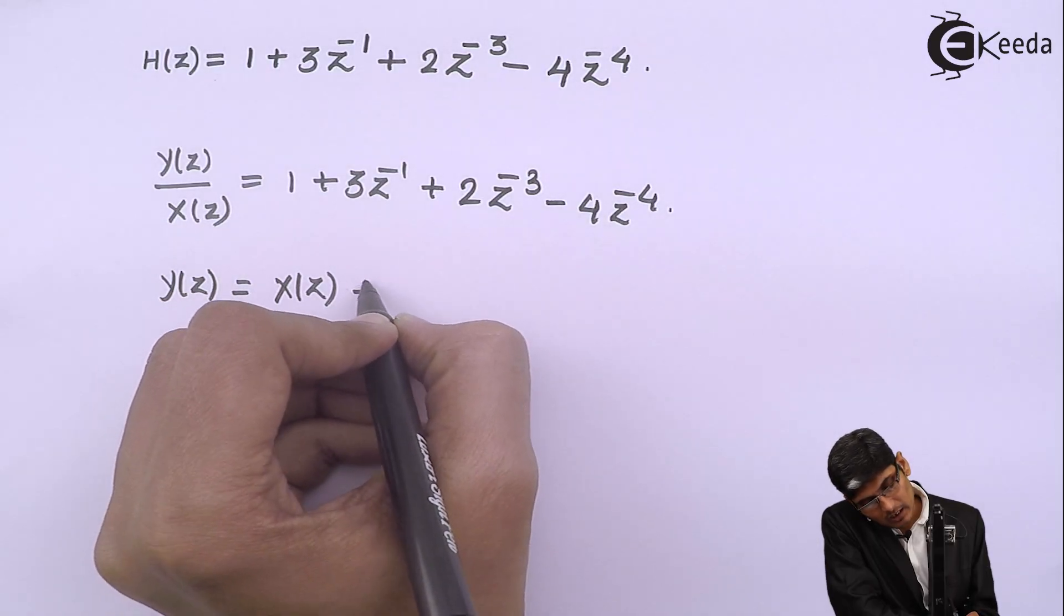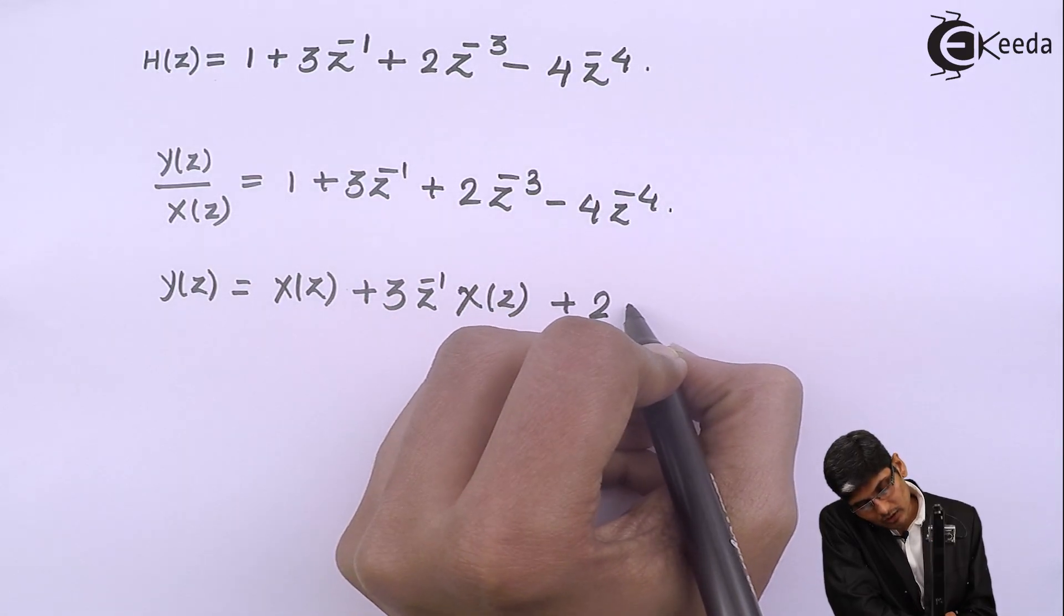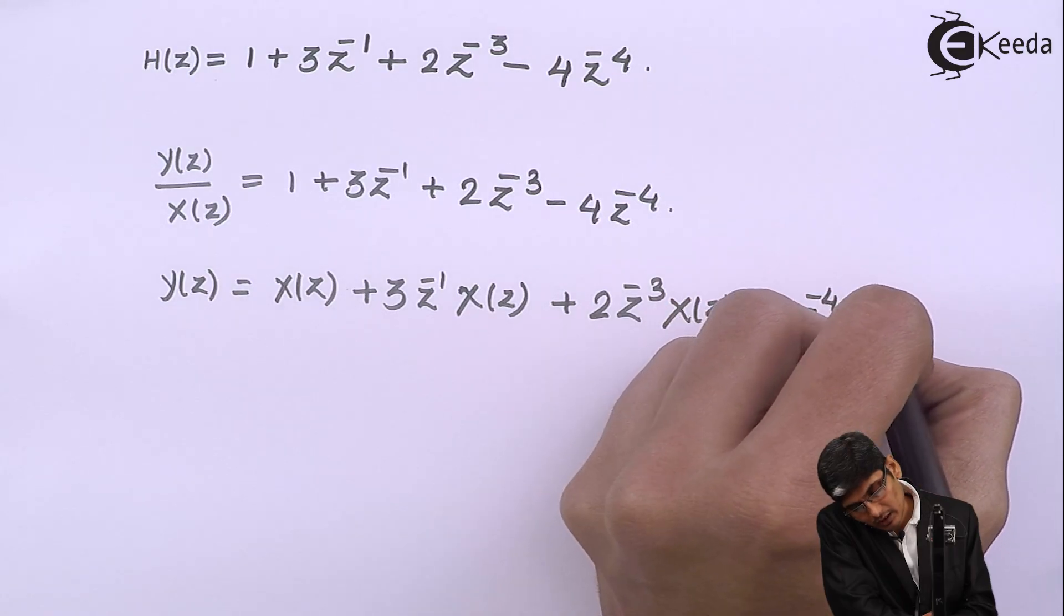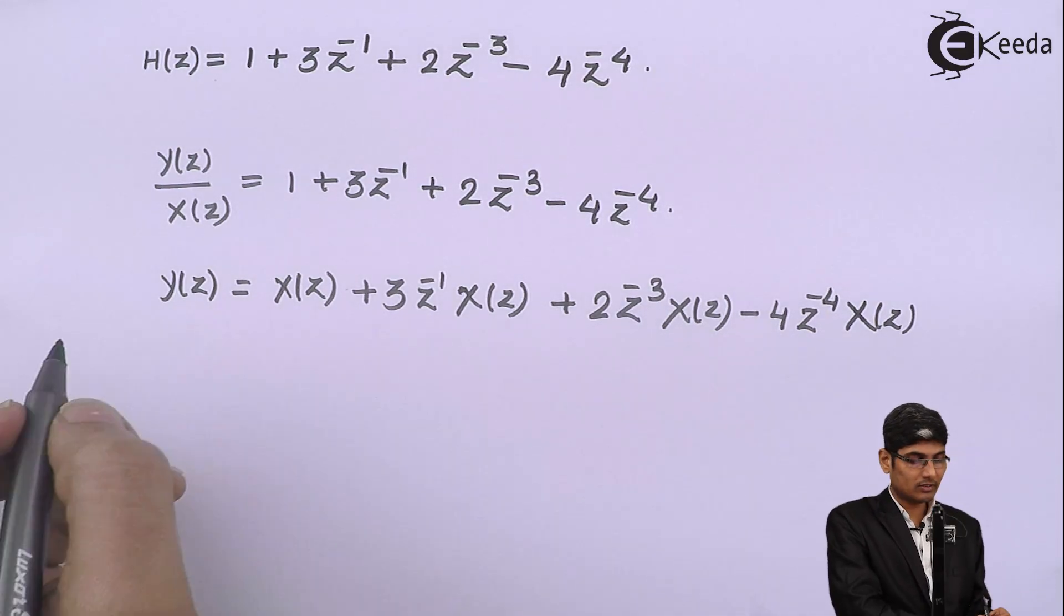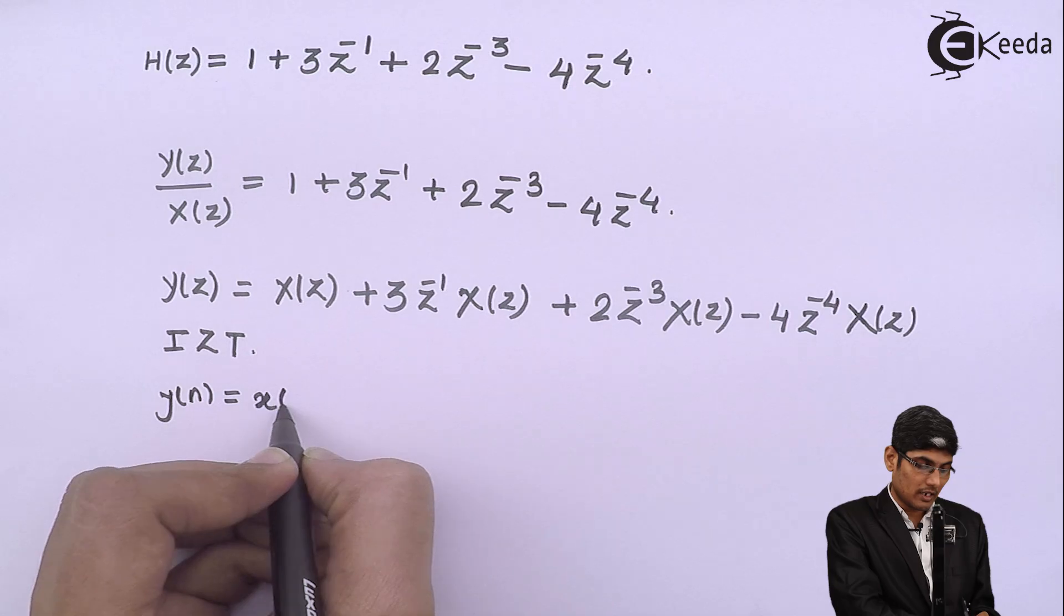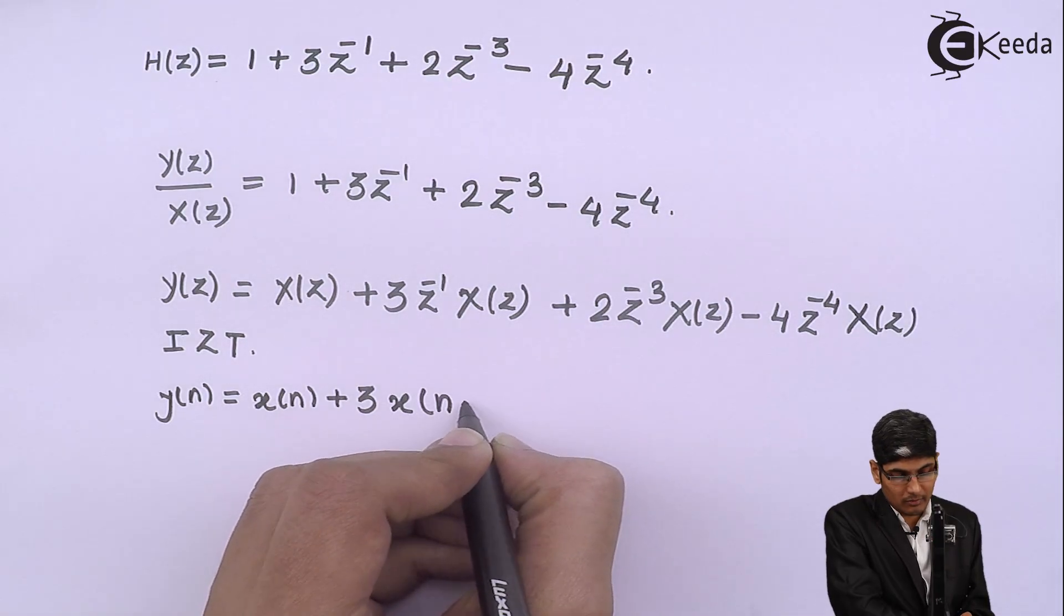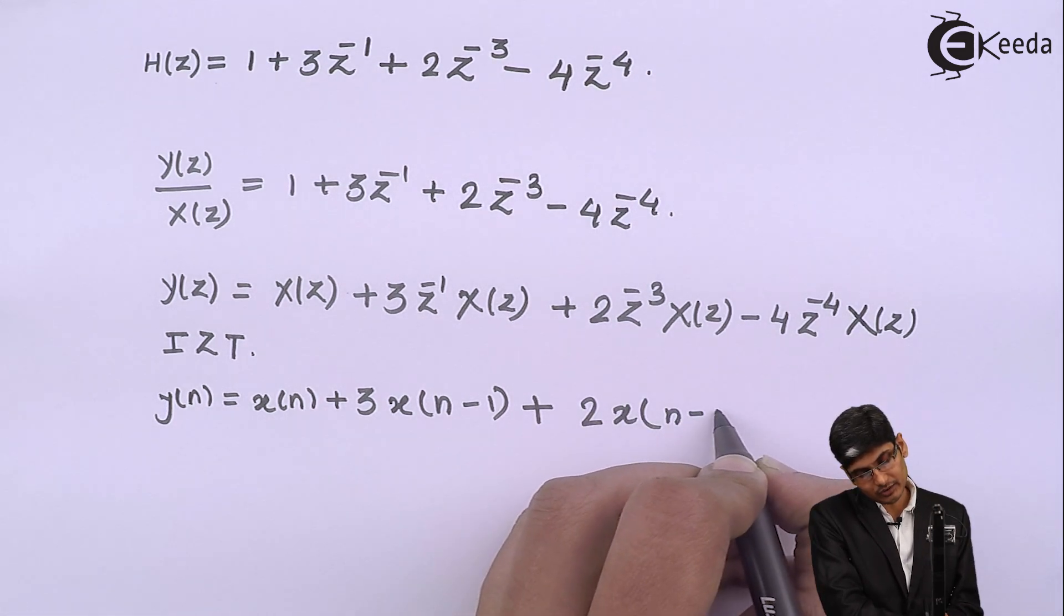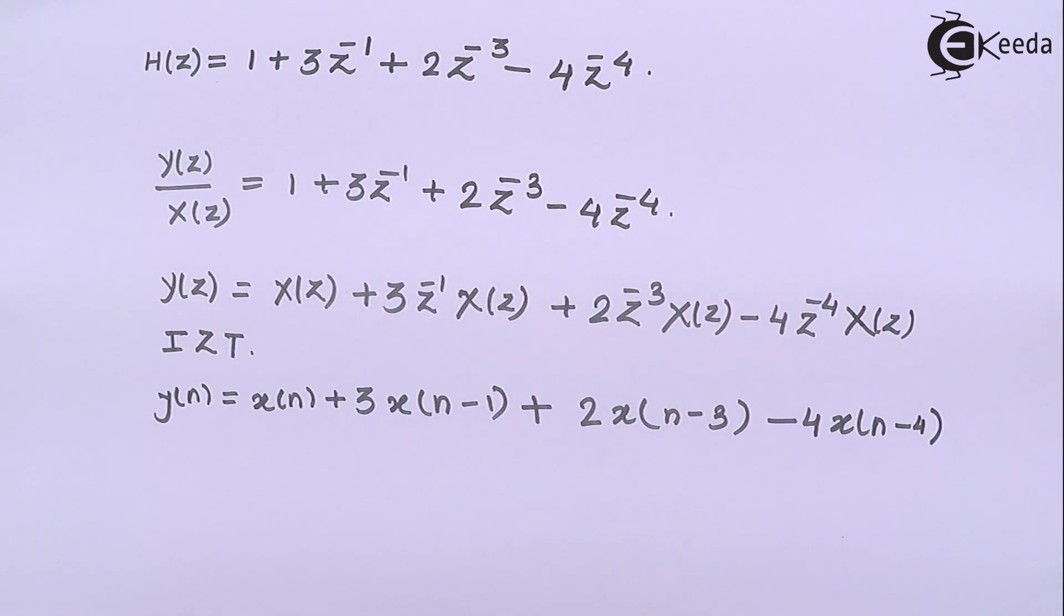So I multiplied both sides by XZ. If I take inverse Z transform, then I am going to get Y of N equals X of N plus 3. Now here Z inverse, if I apply over here, it becomes X of N minus 1, that is 1 delay, plus 2X of N minus 3 because there are 3 delays, minus 4X of N minus 4 because there are 4 number of delays.